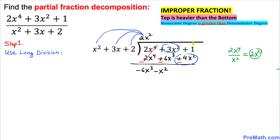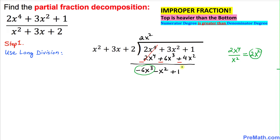We bring down the +1. Now we repeat the process: the leading term is −6x³, divided by the leading term of the divisor which is x². Simplifying gives us −6x, so we write −6x on the top.